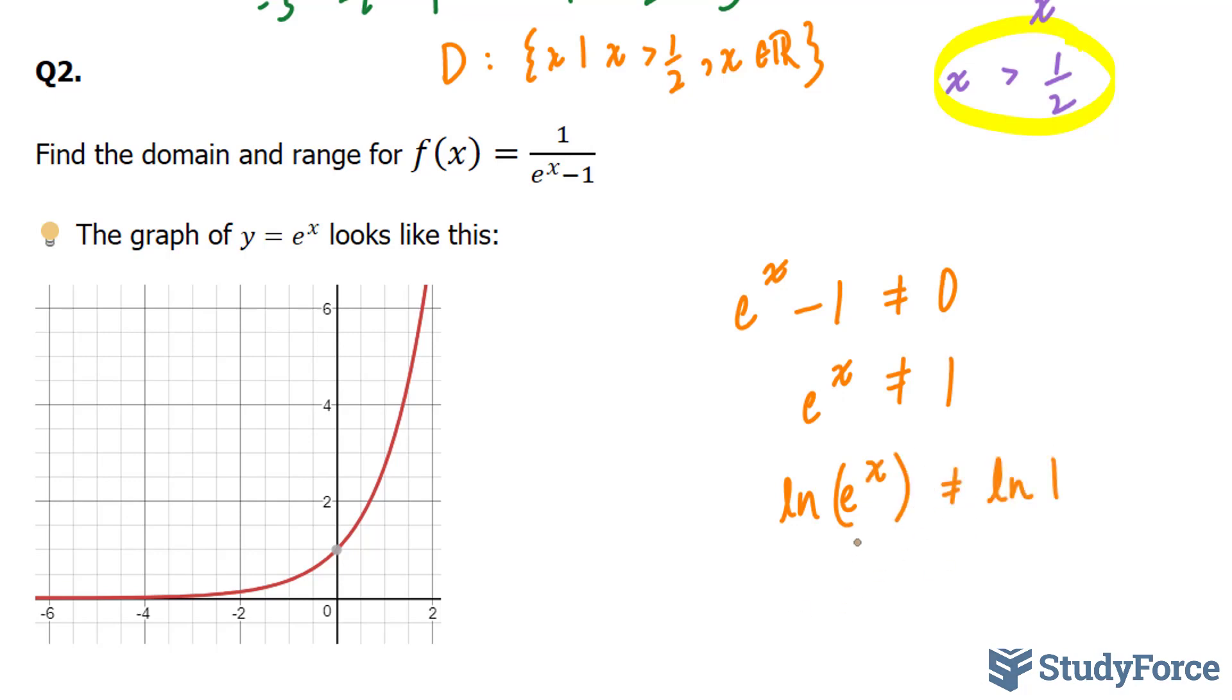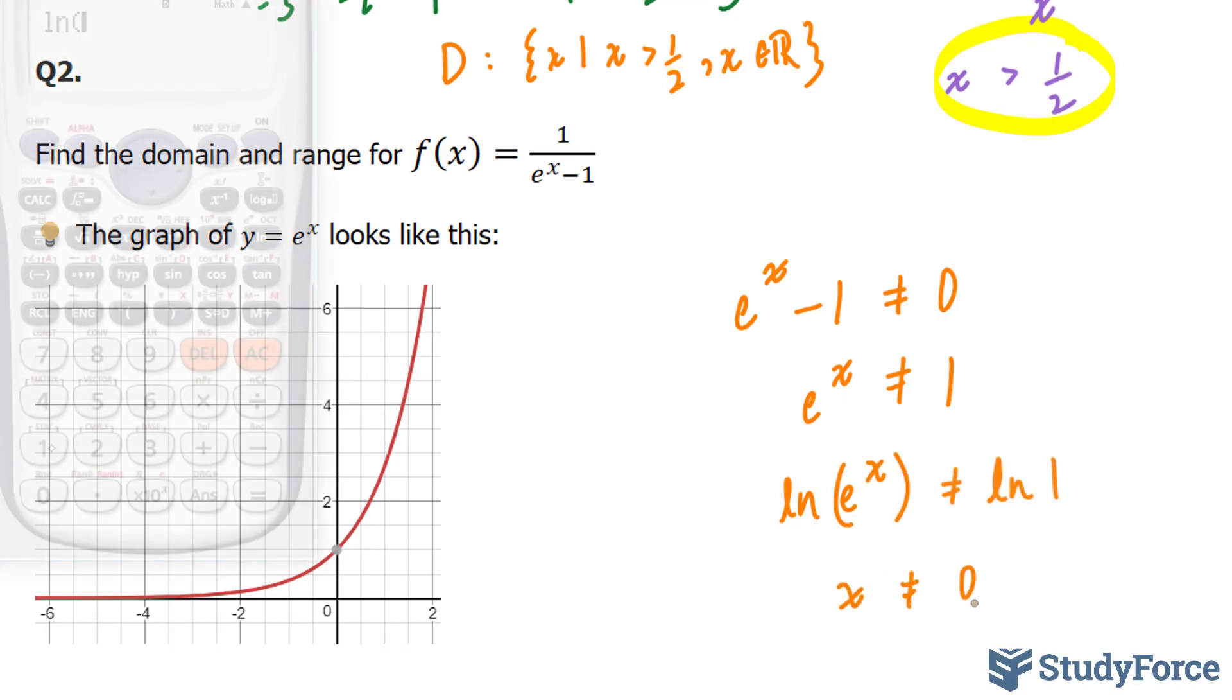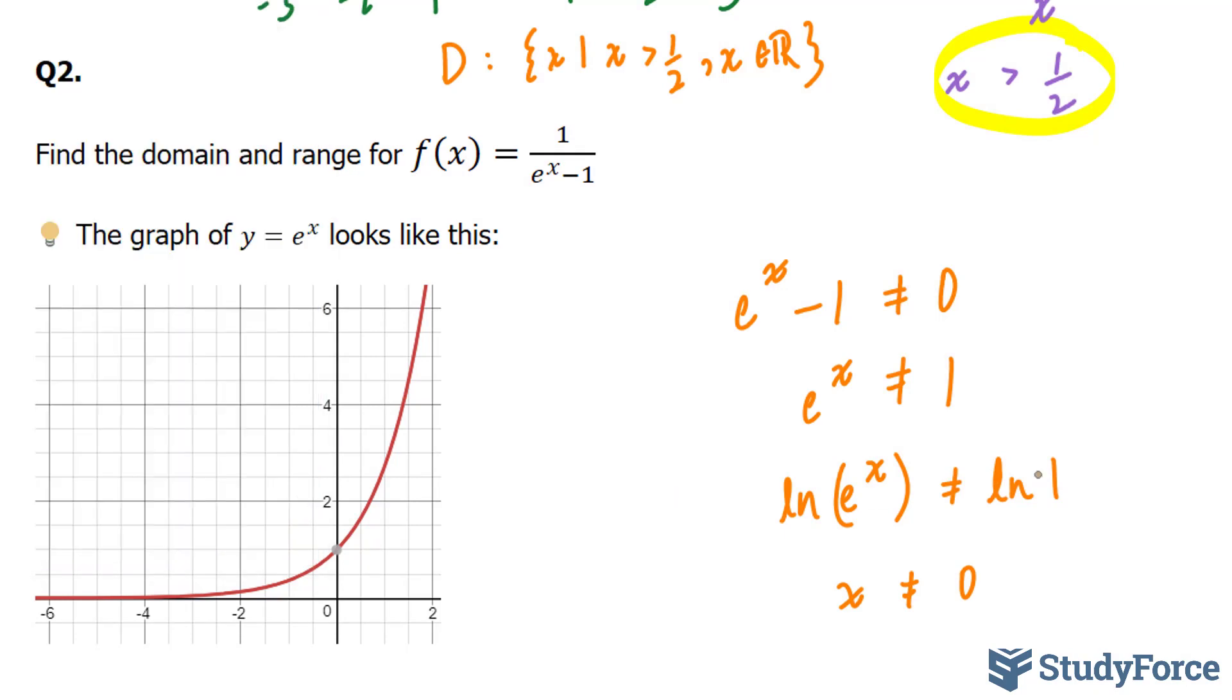And you're left with x cannot equal to 0 because ln(1) is equal to 0. So our domain is x such that x cannot equal to 0 for all real values of x.